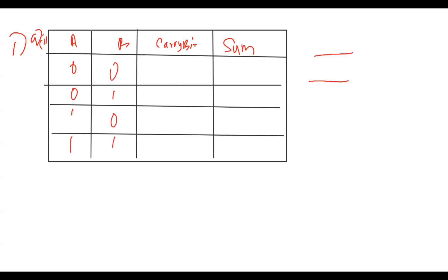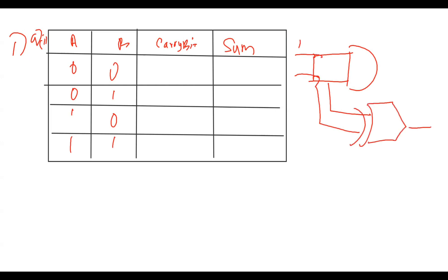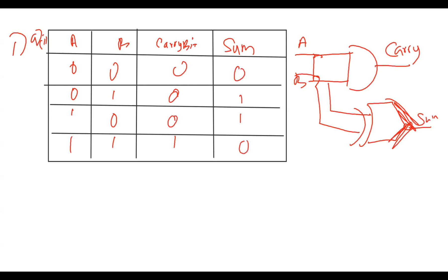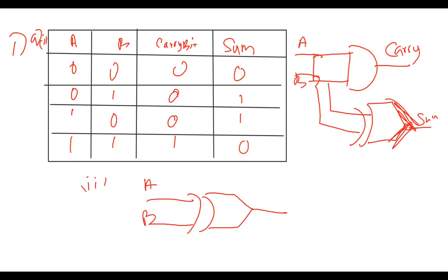For inputs A and B, we have carry bits and sum bits. The sum bit expression is: A·B̄ plus Ā·B.